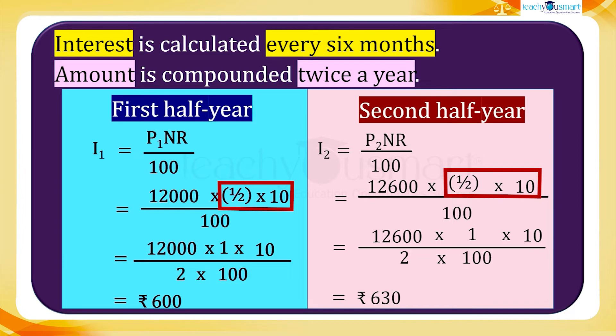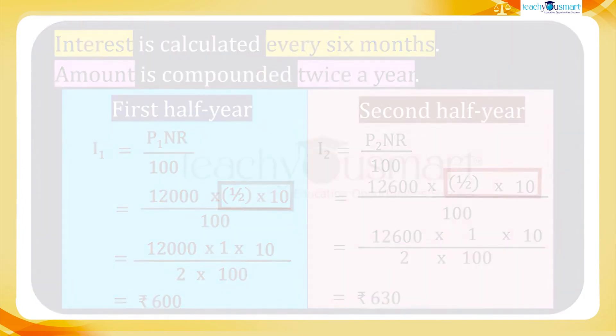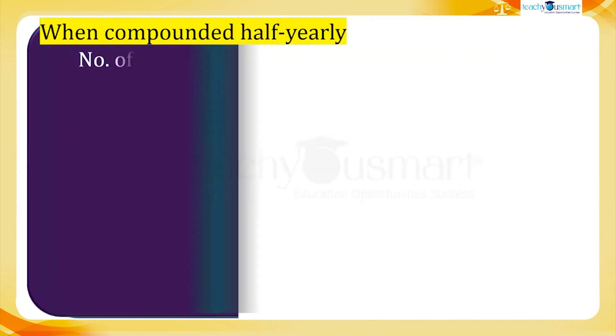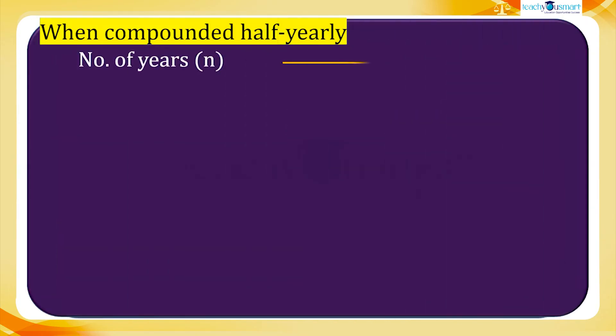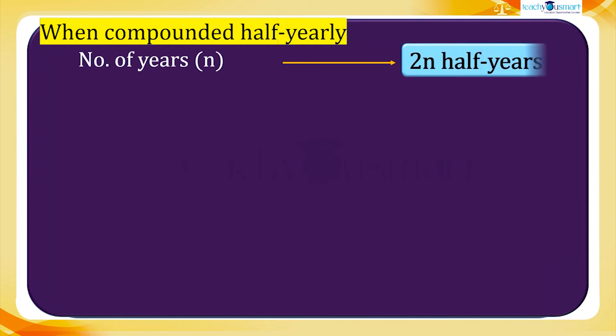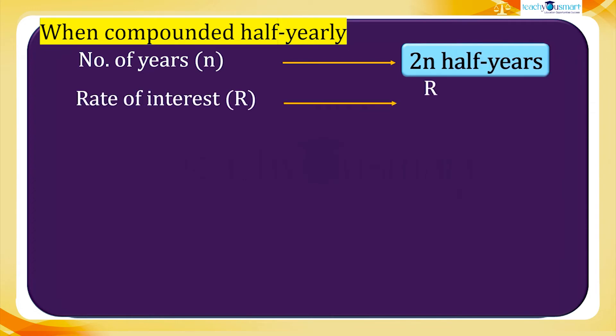We know that there are two half years in a year. So we can say that when interest is compounded half yearly, the number of years n becomes 2n half years, and the rate of interest r becomes r/2 for every half year.